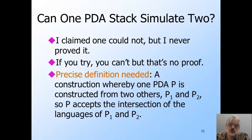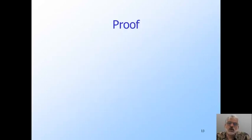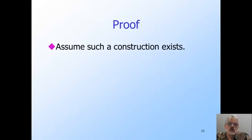So the first thing I need to do is to give a precise definition of what would be considered a successful simulation of two stacks by one. I propose that as a minimum, if I had such a construction, I would be able to use it to design one PDA P that could simulate two others, P1 and P2. And in particular, to accept if and only if both accepted. That is, I would have a PDA construction that showed CFLs were closed under intersection. But we already know that CFLs are not closed under intersection.